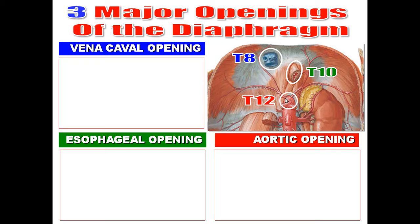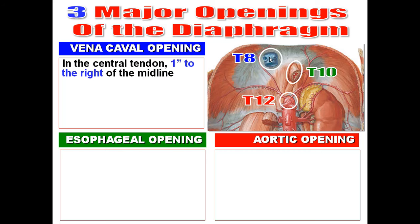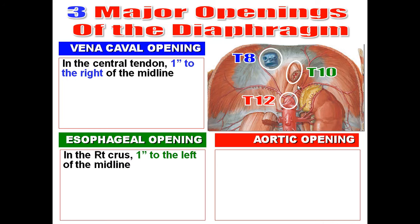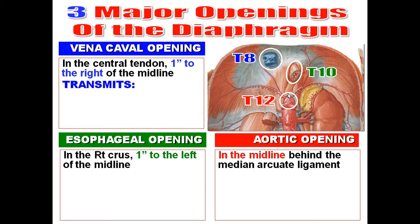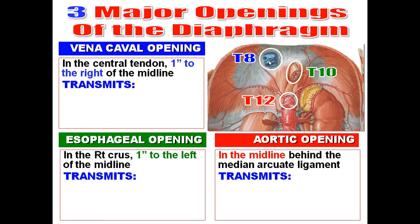Regarding the position of each opening: the vena cava opening is in the central tendon, one inch to the right of the midline. The esophageal opening is in the right crus, one inch to the left of the midline. The aortic opening is behind the median arcuate ligament, in the midline. So: one in the midline — the aortic opening; one to the right — the vena cava opening; one to the left — the esophageal opening.